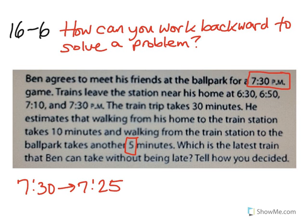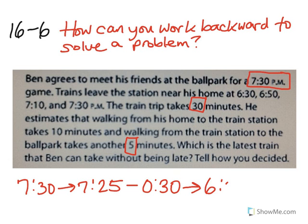The next piece of important information is how long the train ride is. The train trip takes 30 minutes. So now we're going to subtract 30 minutes from 7:25pm. By which time must Ben get on the train? If you subtract the 30 minutes, you get 6:55pm. We're working backwards. Since he needs to be on the train by 6:55pm, is there a train at that time? Looking at the train times, we can see that there is no 6:55pm train.